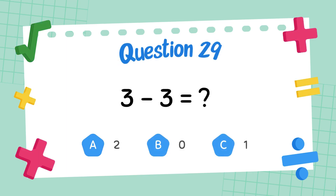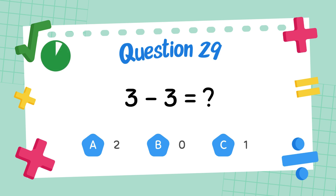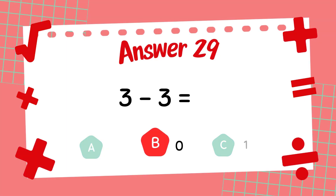What is 7 minus 4? The answer is 3. What is 3 minus 3? The answer is 0.